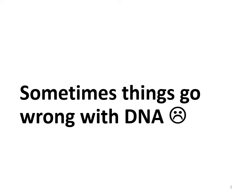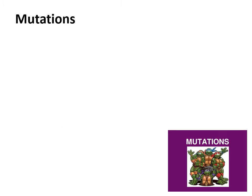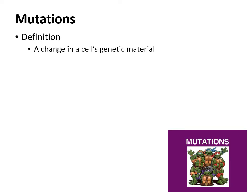The first thing we want to talk about with the genetic content today is the fact that sometimes things go wrong with DNA. We've covered DNA replication, transcription, and translation — it can be quite complicated, with many steps where things can go wrong. When something goes wrong with DNA, it's called a mutation. Mutations are a change in a cell's genetic material, meaning a change in their DNA sequence, in their code.